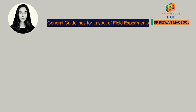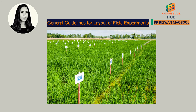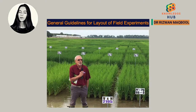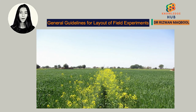6. No plot boundaries are required in case of non-irrigational or non-fertilizer experiments. In such cases, intervening space equal to one row width of that crop should be left to demarcate between the adjoining plots. We can also sow one line of small seeded crop to separate one plot from the other.